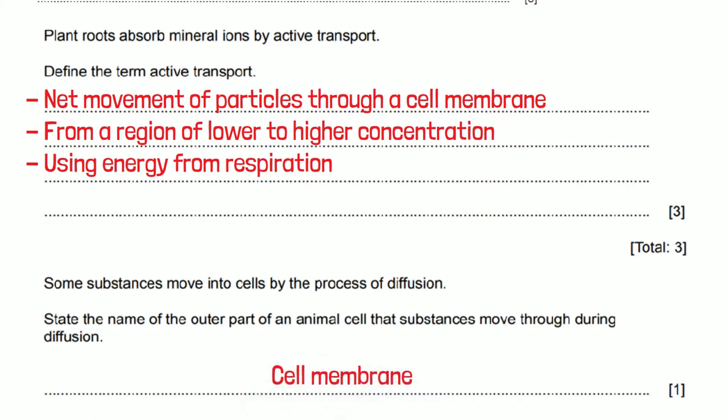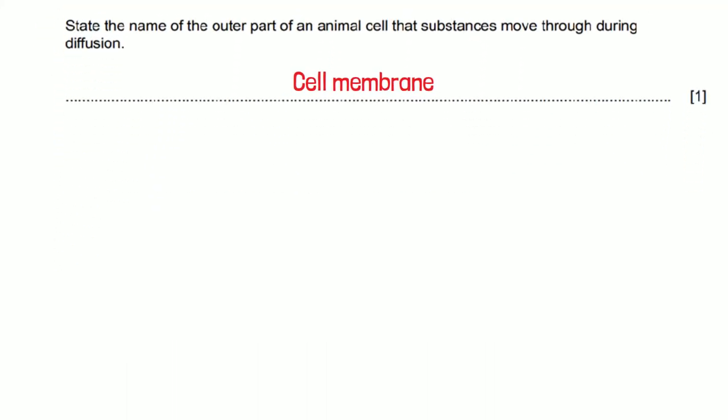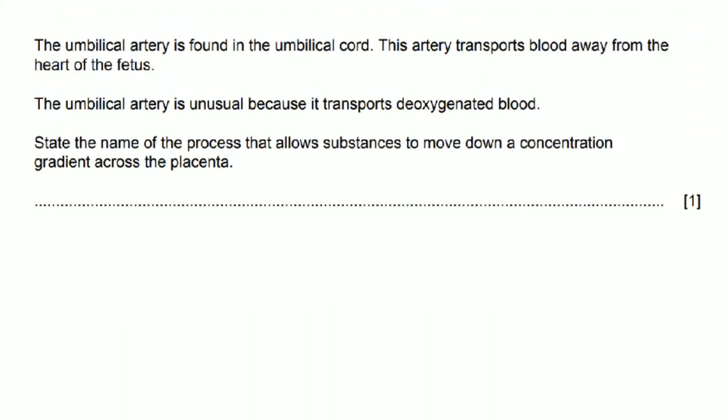This question gives us a lot of information about the umbilical artery and the umbilical cord. It says state the name of the process that allows substances to move down a concentration gradient across the placenta. Down a concentration gradient means from high to low so that means the answer is diffusion.